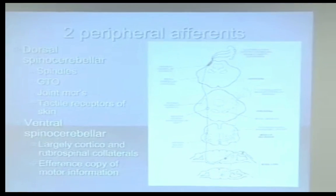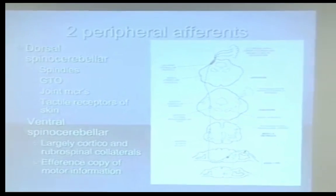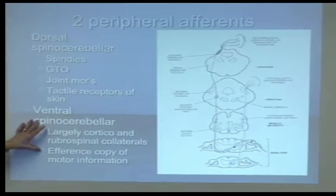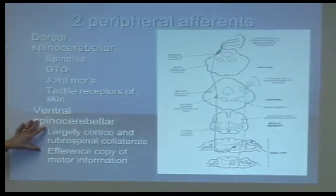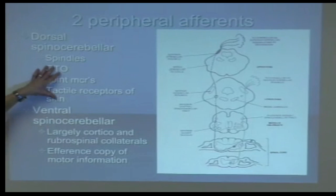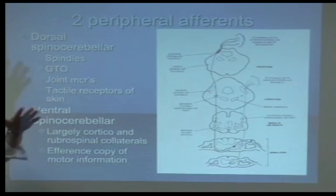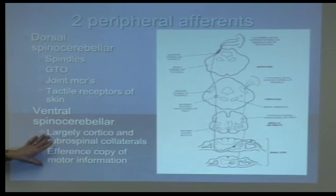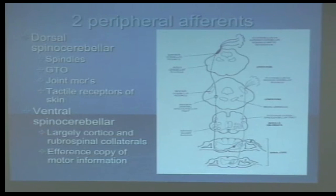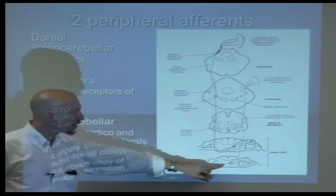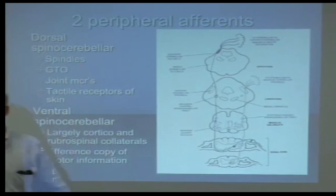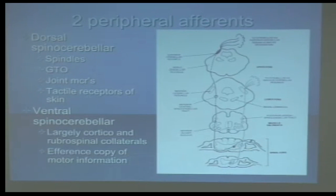There are central afferents and two peripheral afferents: the dorsal and the ventral spinal cerebellar tracts. The dorsal tract carries information from our receptors. The ventral tract is what we call an efferent copy — it's the backup. It sends information back about what's occurring down at that level of the cord. It's the efferent copy, the system of checks and balances.